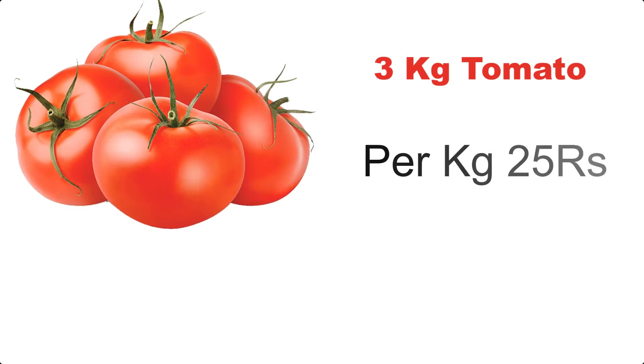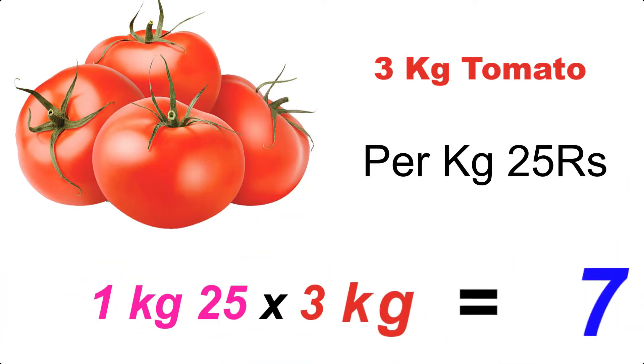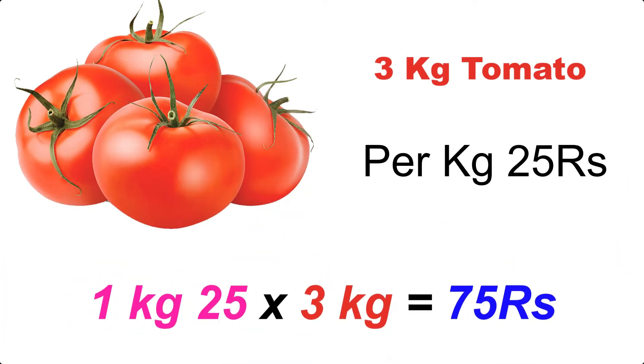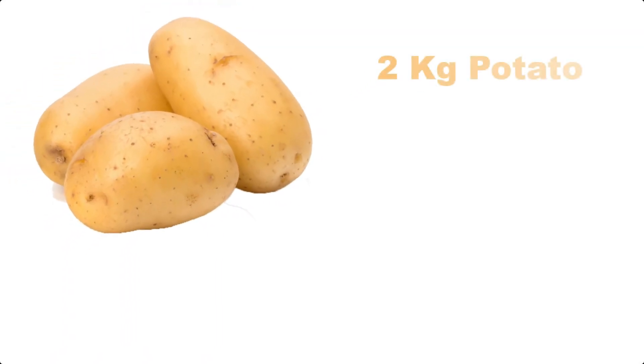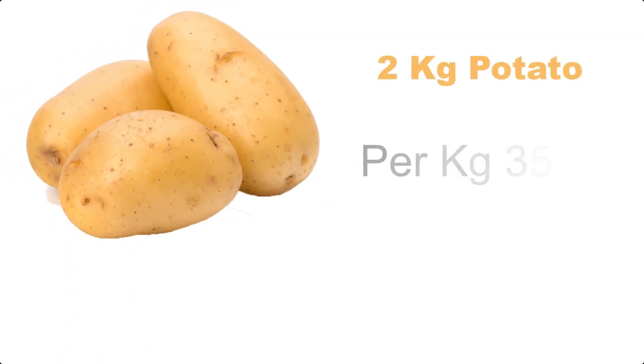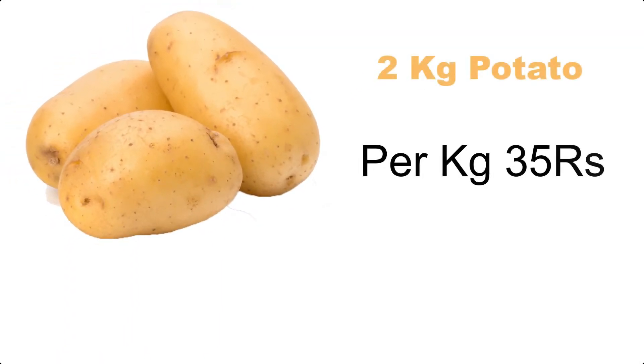3 kg tomato at 25 rupees per kg: 25 multiplied by 3 equals 75 rupees. 2 kg potato at 40 rupees per kg: 40 multiplied by 2 equals 80 rupees.